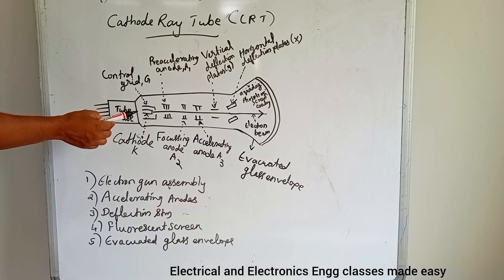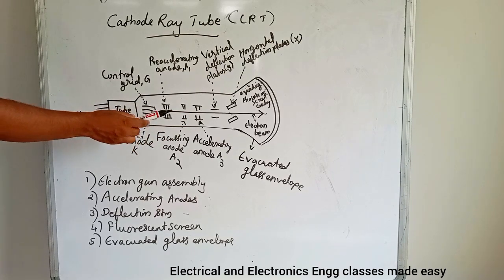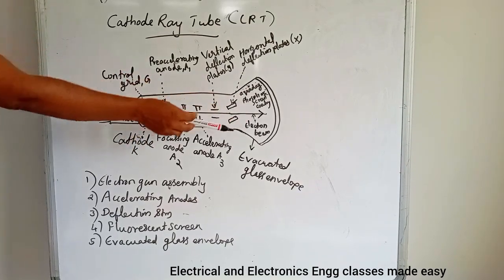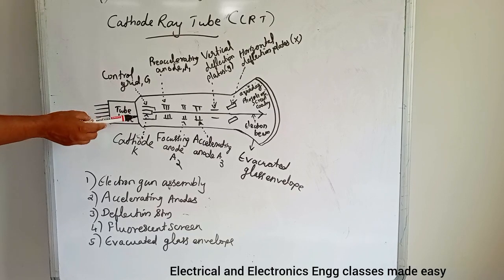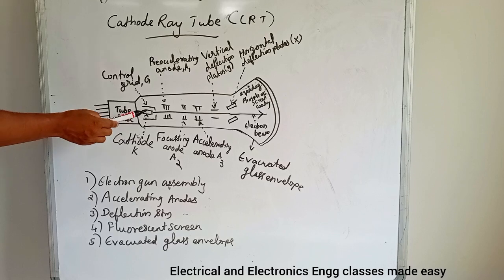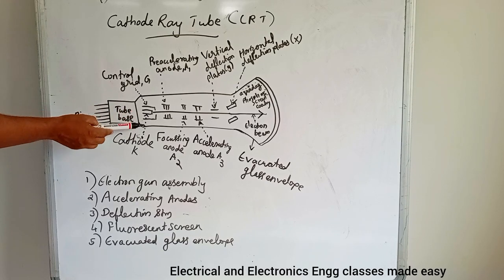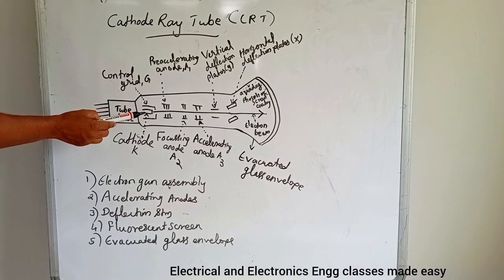The purpose of the electron gun assembly is to provide a source of electrons, converged and focused into a well-defined beam, which is accelerated towards the fluorescent screen. The electrons are emitted from the hot cathode due to thermionic emission. The control grid, maintained at a negative voltage, determines the amount of electron flow.